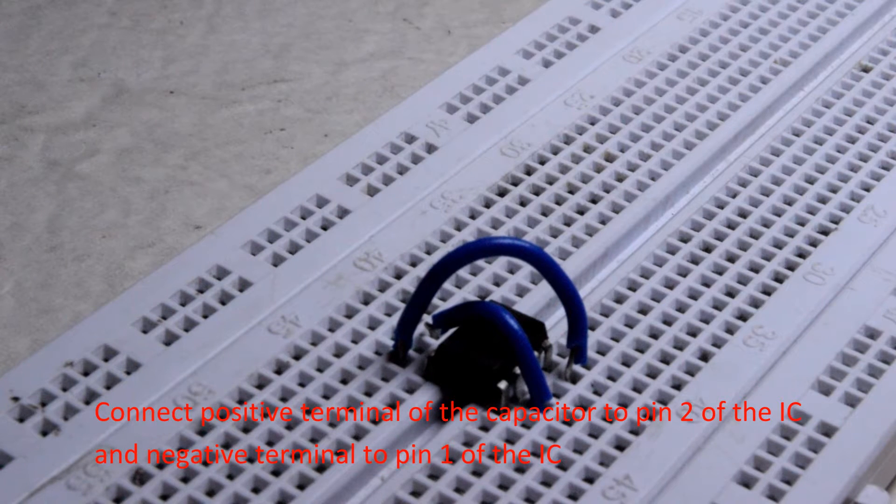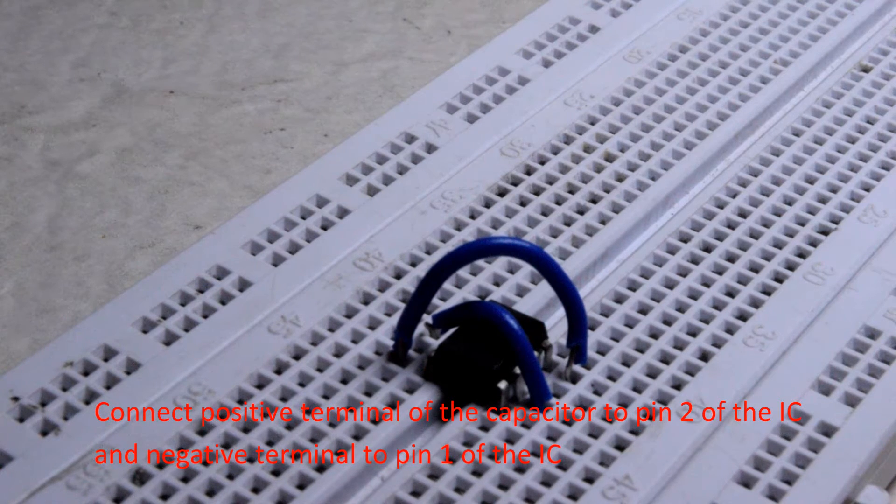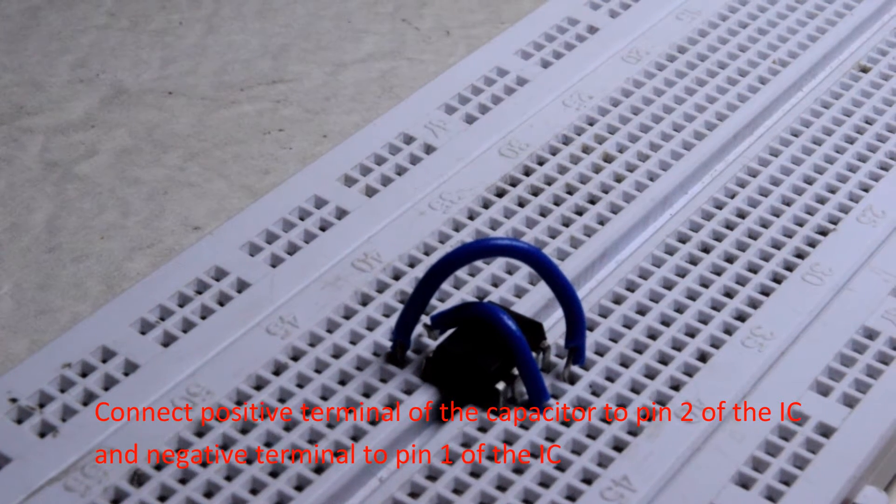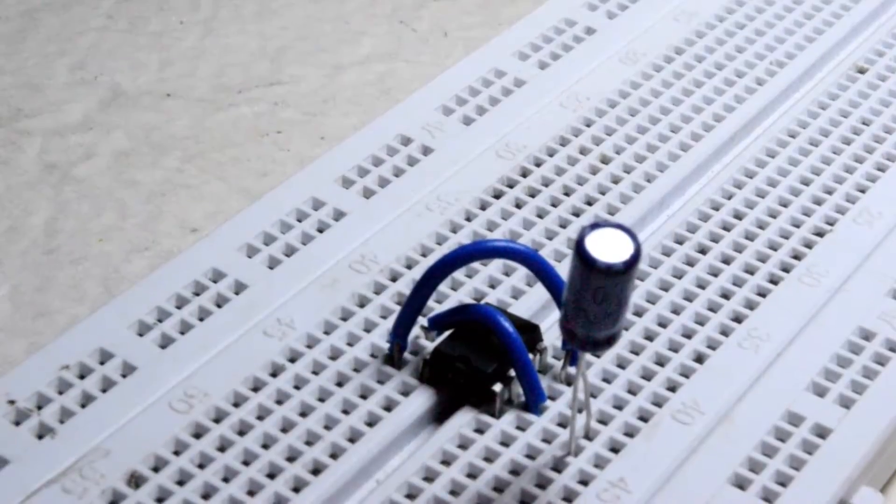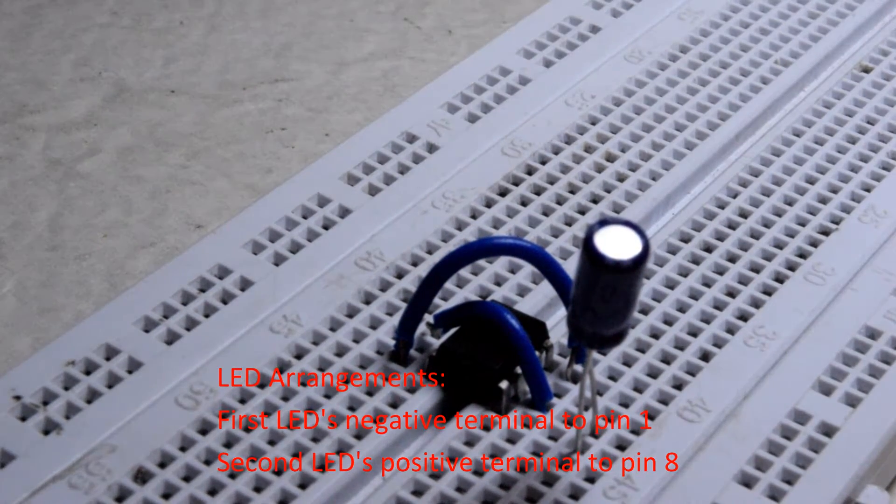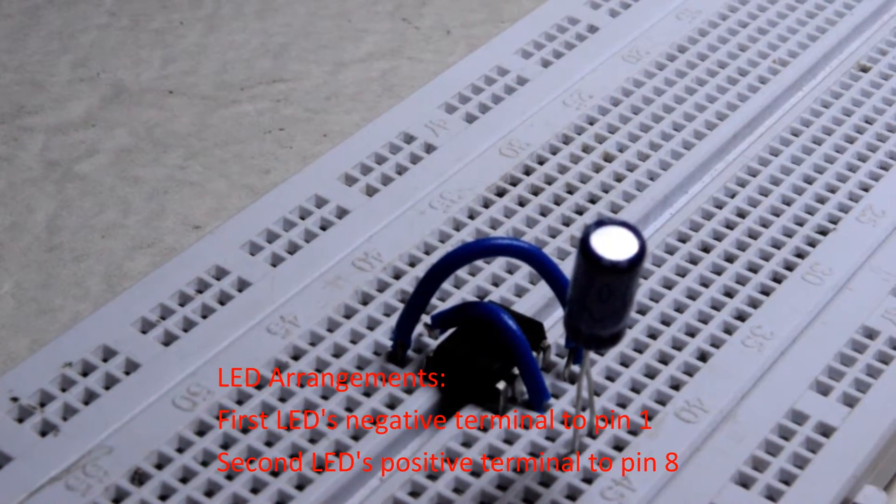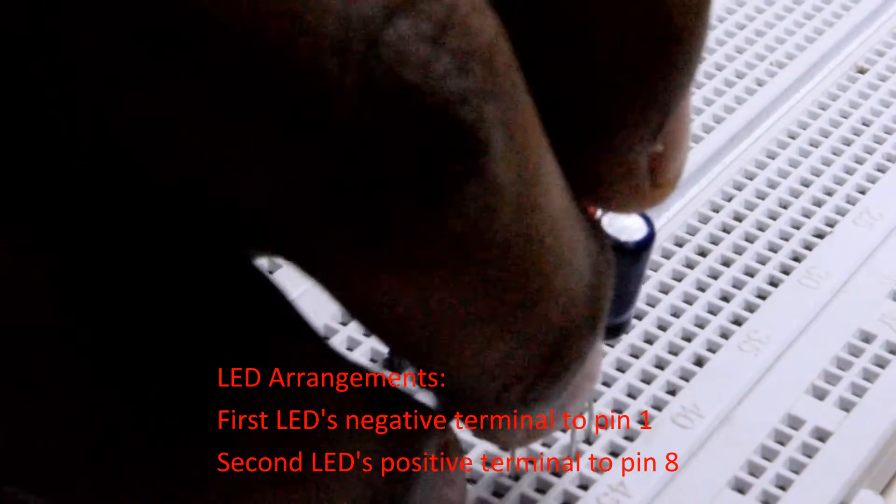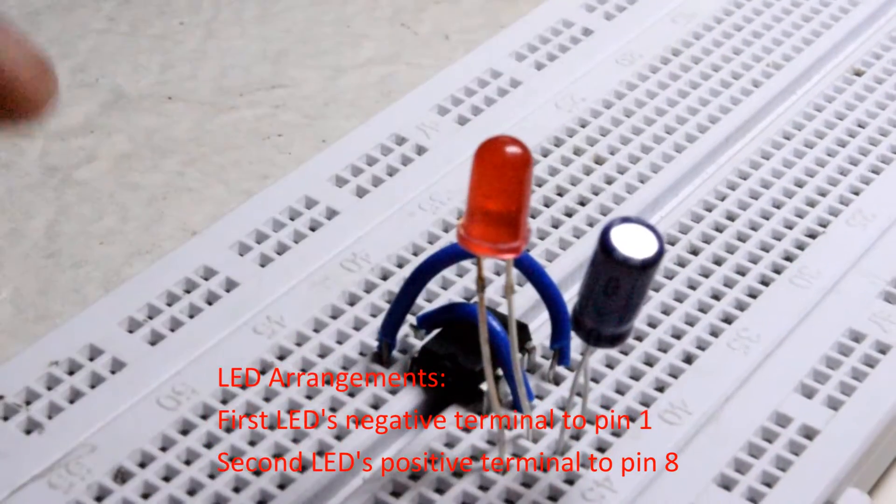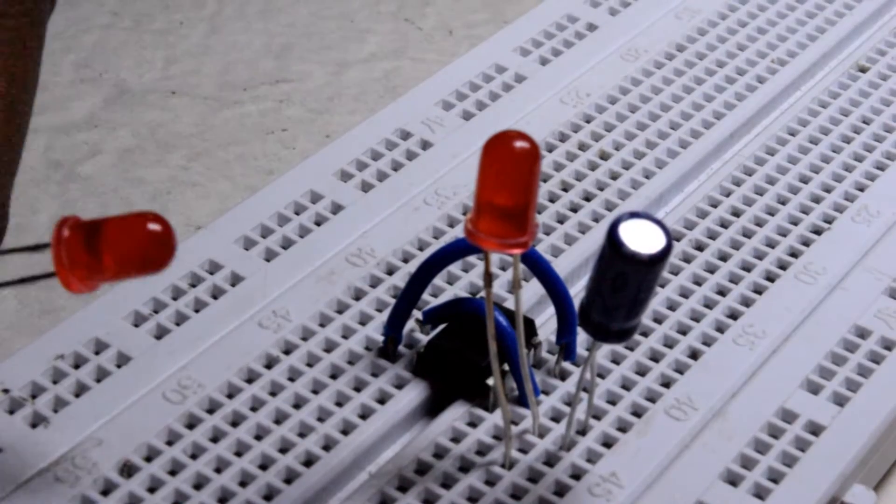Now take your LEDs. Connect one LED's negative terminal to pin 1 of the IC. The shorter pin is the negative terminal. Take the other LED and connect its positive terminal to pin 8 of the IC.